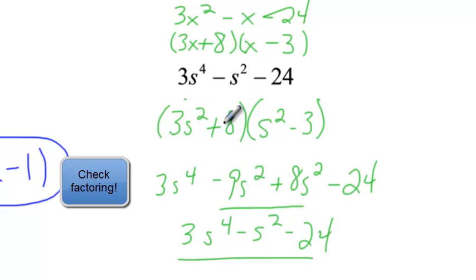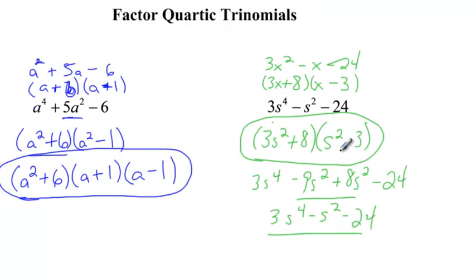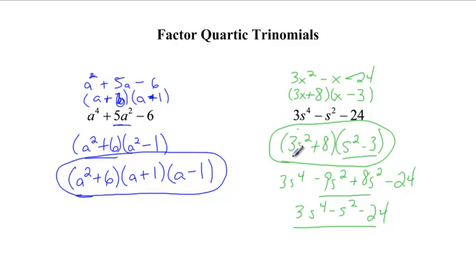These two terms give me 3s to the fourth minus s squared minus 24. And that's what we started with. So this right here is our factored form. And we would get that by guessing, checking, and just treating it as though it were a quadratic trinomial. Now, we can't factor that any further, and we can't factor that any further. So that is our final answer.